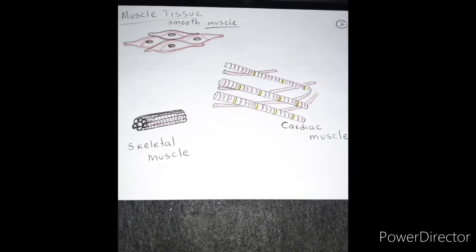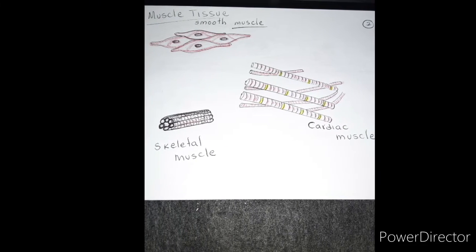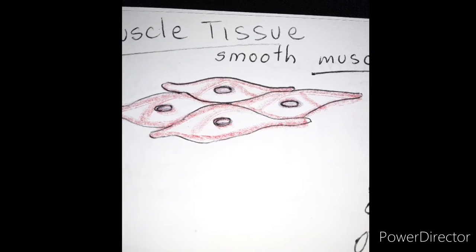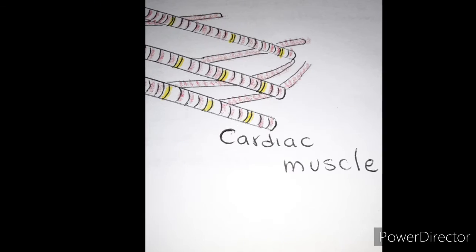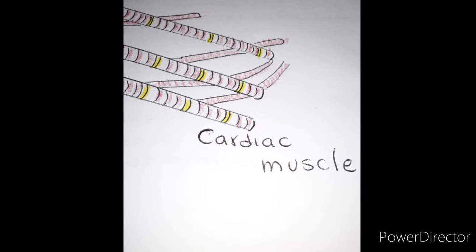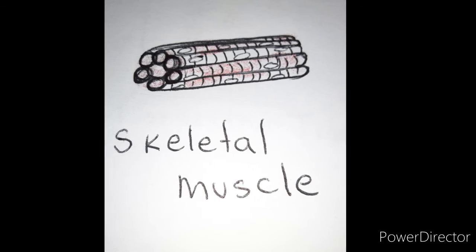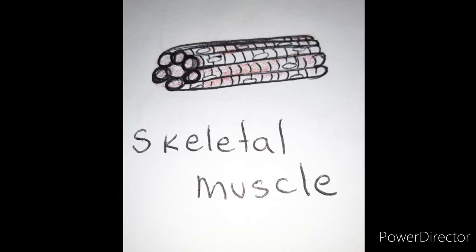From the muscle tissue, we have the smooth muscle, el tejido liso, cardiac muscle, el tejido cardíaco, skeletal muscle, el musculoesqueletal.